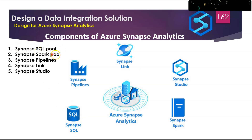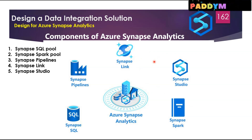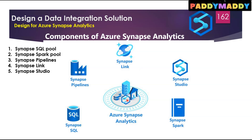The Synapse Spark Pool is a cluster of servers running Apache Spark to process data. You write your data processing logic using one of four supported languages: Python, Scala, SQL, and .NET via .NET for Apache Spark. Apache Spark for Azure Synapse integrates with the open-source big data engine used for data preparation, data engineering ETL, and machine learning.